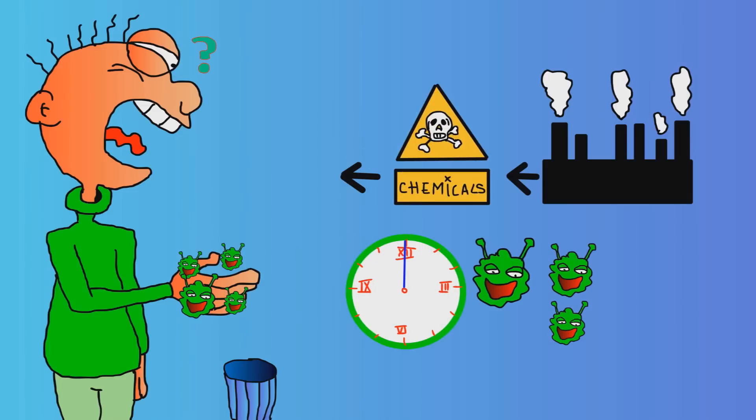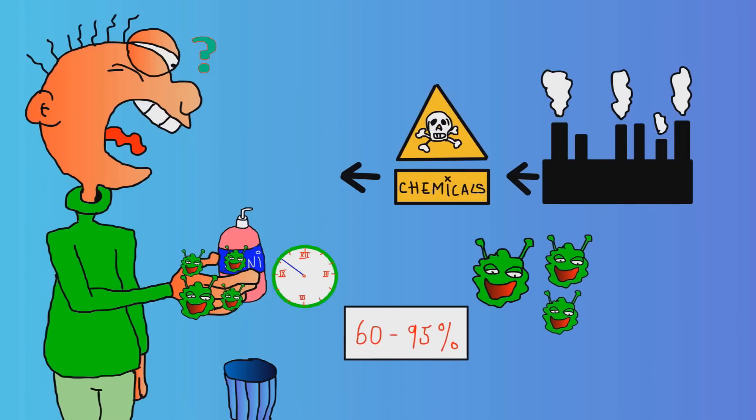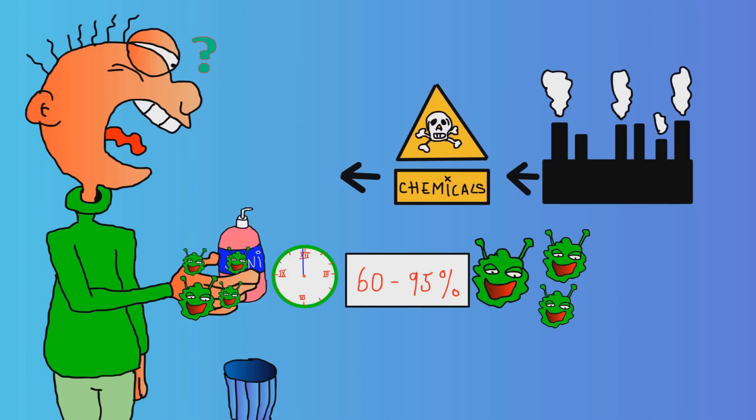Hand sanitizers, on the other hand, are actually pretty effective when you're low on time, or if you don't have any soap around. Use a 60-95% alcohol-based hand sanitizer to kill the bacteria.